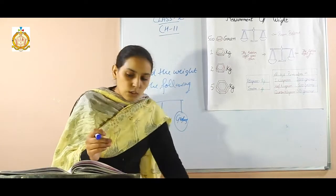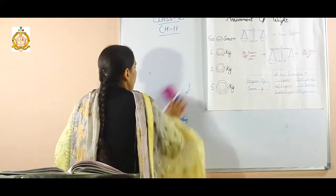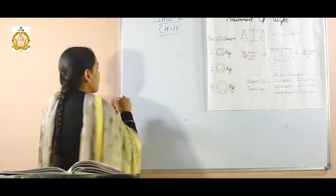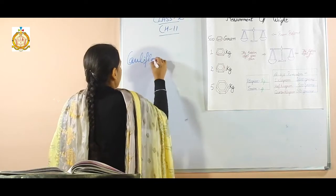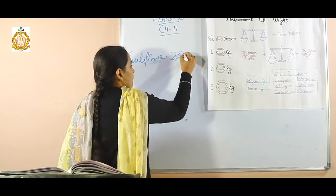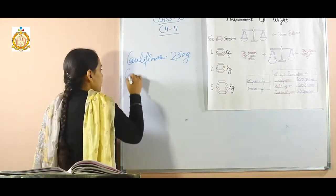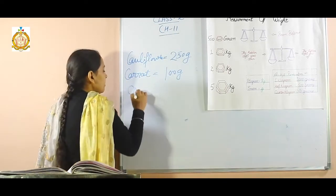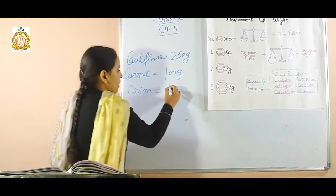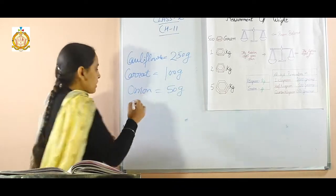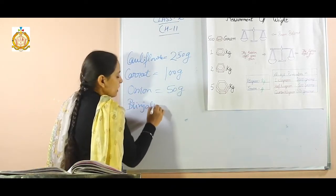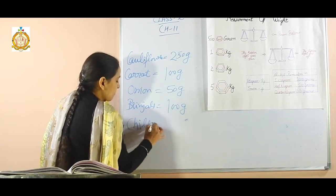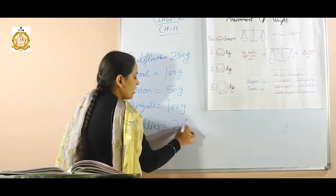Next, fourth part: how much do these vegetables weigh? Students, the vegetable weights are given. Cauliflower weight is 250 gram. Next one, carrot weight is 100 gram. Next one, onion weight is 50 gram. Next one, brinjals weight is 100 gram. And the last one, that is chillies — the chillies weight is 20 gram.